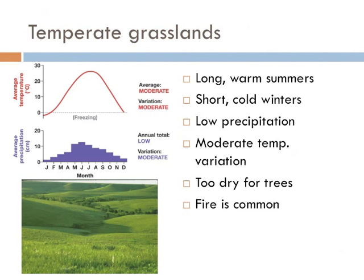When I think of temperate grasslands, I'm brought back to my homeland, Oklahoma — long, warm summers, if you can call 105 degrees for 30 days straight warm, and short, bitterly cold winters. Overall, there's very low precipitation, which is why trees are infrequent. Another factor that controls the growth of woody plants is fire. Fire is very common in grassland, and without it, the grasses would eventually become shrublands.